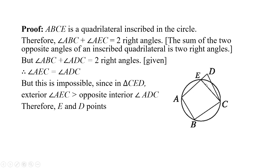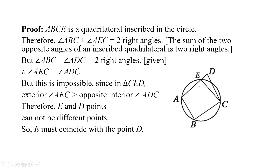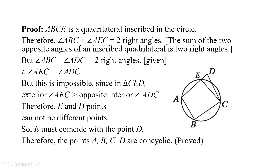Therefore, E and D cannot be different points. So E must coincide with point D. Therefore, the points A, B, C, and D are concyclic, and that is our proof.